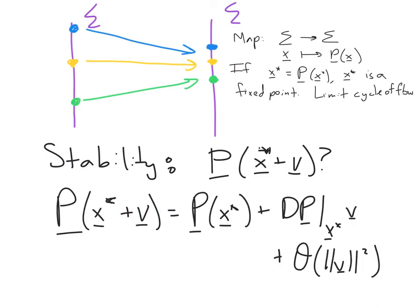Because we're quite close to the fixed point, to the point corresponding to the limit cycle, we can use a Taylor expansion to approximate the map. The map is approximately the value of the map for the fixed point itself, and so we know this is actually just x star.